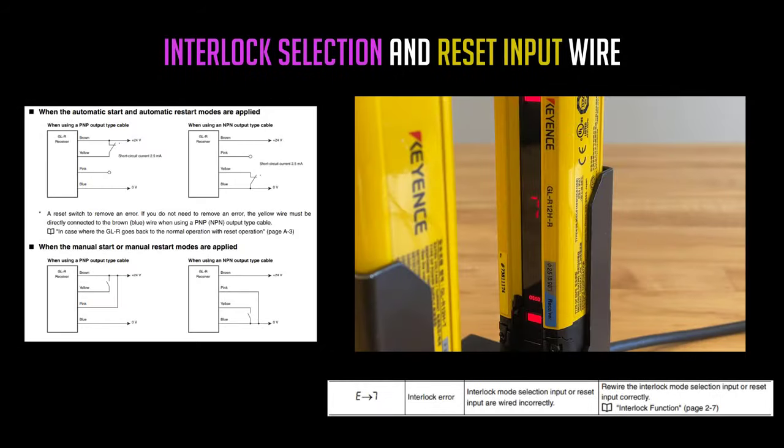When wiring a set of GLRs for the first time, you may experience an interlock error or E7 error. This is incorrectly wiring either the pink or yellow or even both wires from the GLR. Take a look at your GLR user's manual to understand what both of these wires need to see in order to properly function.